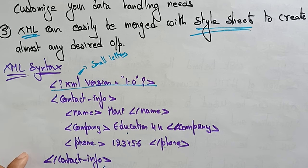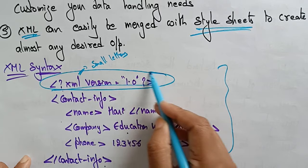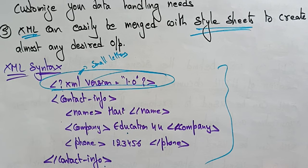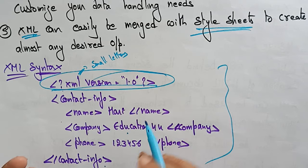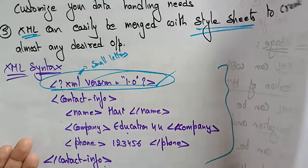This is the basic syntax of XML. The starting step is important for declaring the tags. I already said we can create our own tags — you must define your own tags. That's why I'm defining my own tags: contact information, name, company, phone number — my own tags. Whenever you declare the XML version, you can create your own tags. That is the main use of XML.